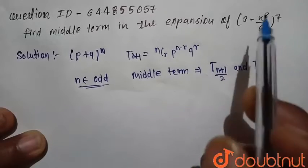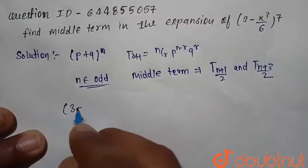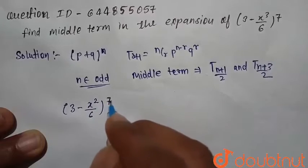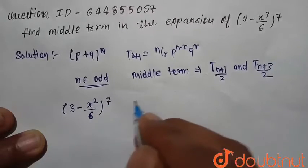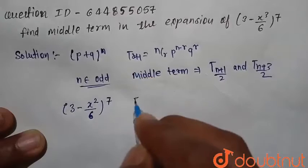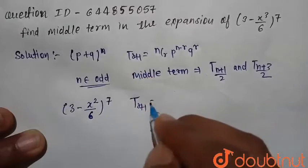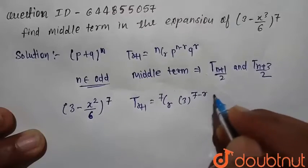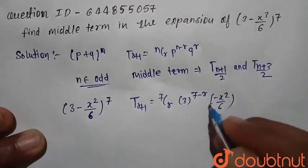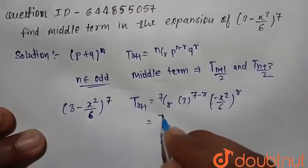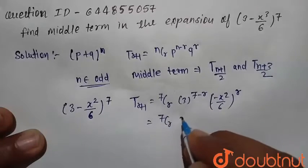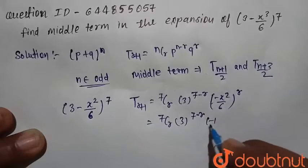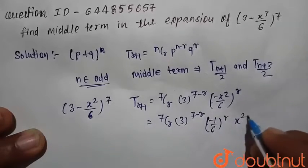Using this, we first write the general term of this expansion: (3 minus x-squared divided by 6) raised to power 7. The general term T_(r+1) is equal to 7Cr times 3 raised to power (7 minus r), times (minus x-squared divided by 6) raised to power r. This simplifies to 7Cr times 3 raised to power (7 minus r), times (minus 1) raised to power r, divided by 6 raised to power r, times x raised to power 2r.